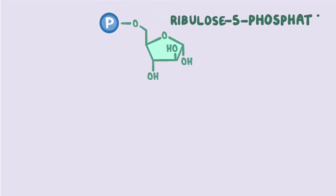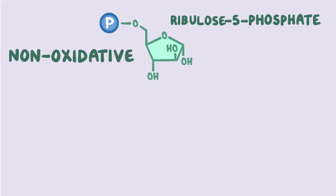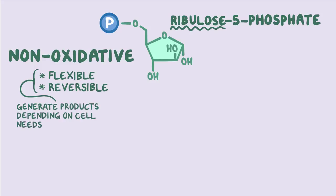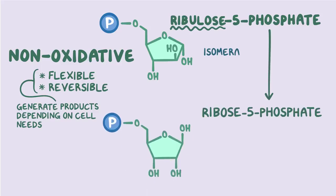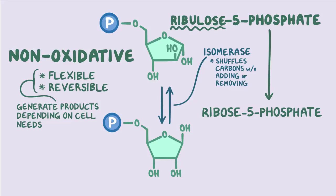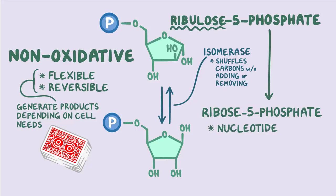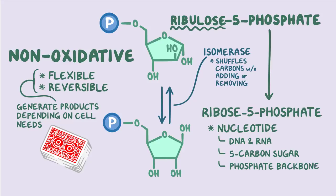Now let's go back to see what happens to ribulose-5-phosphate during the non-oxidative pathway — remember, that's ribulose, not ribose. The non-oxidative pathway is flexible and reversible, and can generate different products depending on what the cell needs. Ribulose-5-phosphate initially gets converted to ribose-5-phosphate by an isomerase enzyme, which simply shuffles the carbons on a molecule into different positions without adding or removing anything. Ribose-5-phosphate is important in nucleotide synthesis — the building blocks of DNA and RNA — serving as the 5-carbon sugar required for DNA or RNA synthesis.